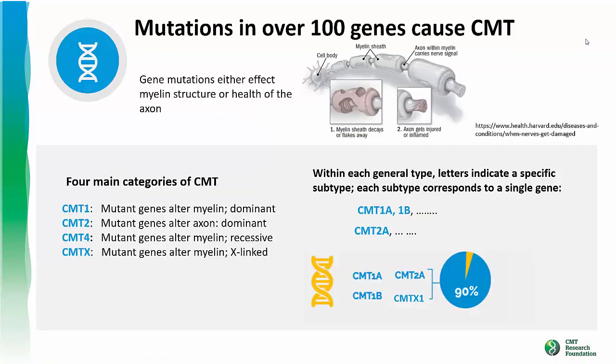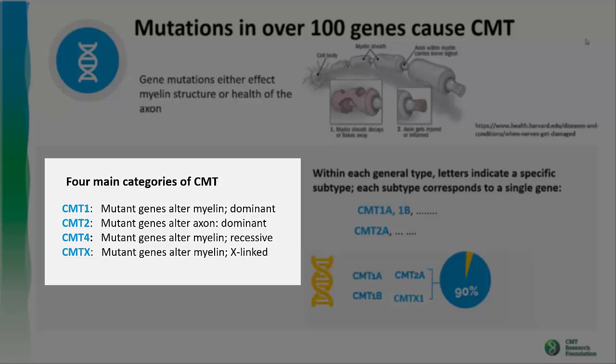CMT is not a single disease — over 100 different genes cause the disease. These are genes that are either important for the structure of myelin or for the health of axons. Four main categories of CMT are recognized: CMT 1, 2, 4, and X. These categories are based on whether it's the myelin or the axon that is primarily affected by the gene mutation, as well as the pattern of inheritance.